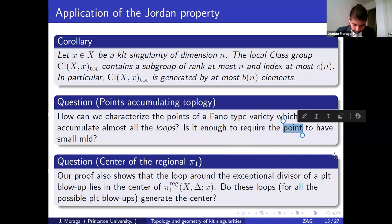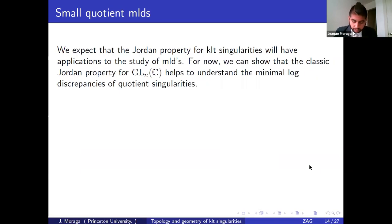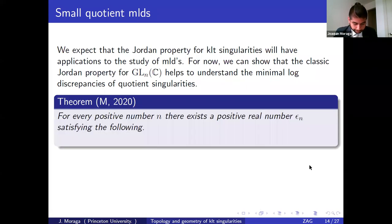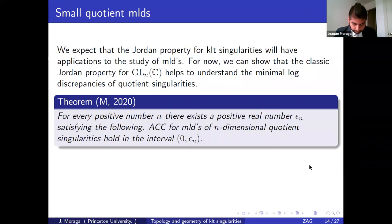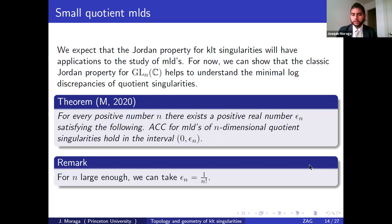We expect the Jordan property for KLT singularities to have nice implications on the study of minimal log discrepancies. For now I can show that the Jordan property for GL_N helps us understand minimal log discrepancies. I proved recently that ACC for MLDs of N-dimensional quotient singularities holds on some small interval around zero — and this interval shrinks as you go up in dimension. For quotient singularities, you can take ε_N to be 1/N! essentially due to Collins' result of 2010.